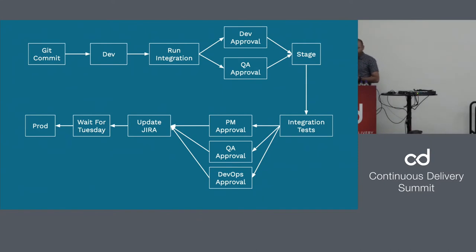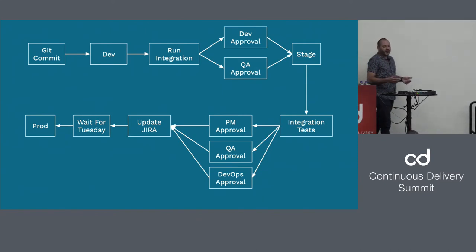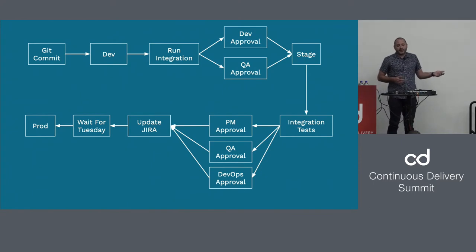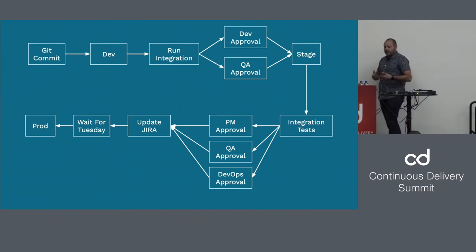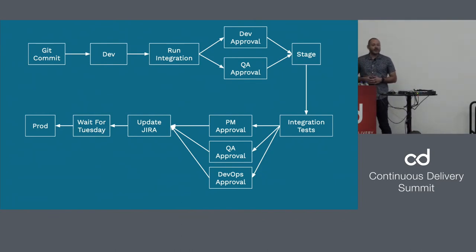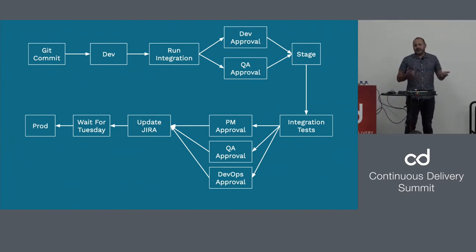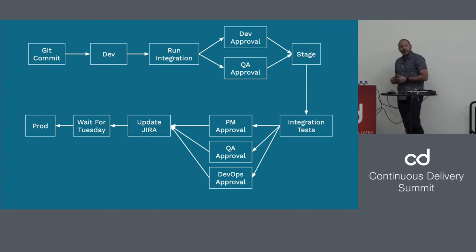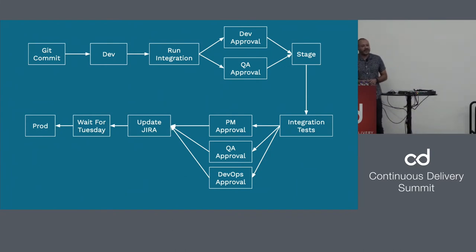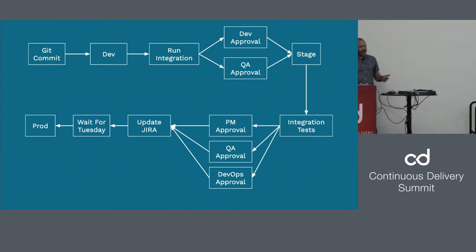After the approval happened, they went to update JIRA and then waited for Tuesday. When you ask them why Tuesday, the answer was: that's just when we do deployments. Probably a lot of us have an arbitrary deployment day. I'm not sure Tuesday is better than Wednesday or Thursday — they just chose that date, and probably the person who chose it no longer works there. Nobody knows why, but it's there anyway.